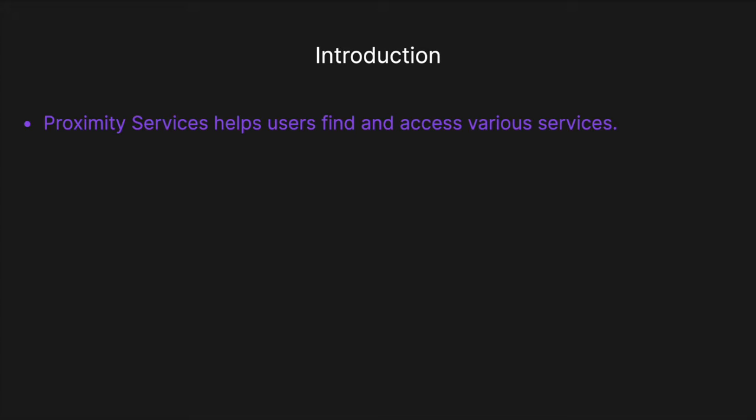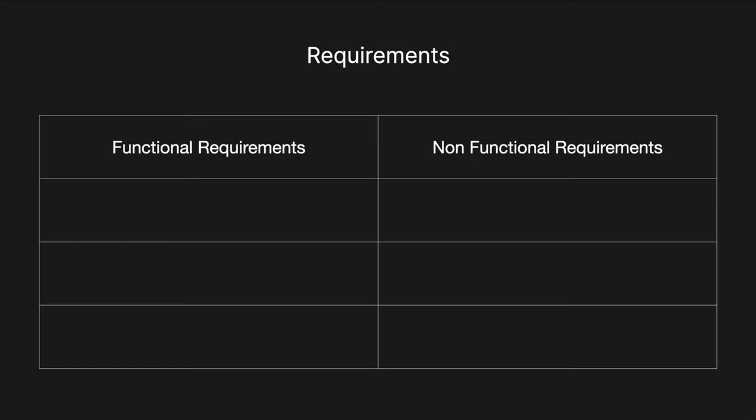Today we're going to be designing a proximity service — applications like Yelp that help users find and access various services like businesses and points of interest based on their current location. Designing a proximity service is a very popular system design question as it covers many core system design concepts including storing and retrieving data from multiple data sources, scalability, reliability, and interacting with geolocation services.